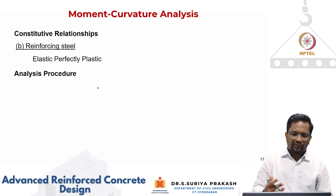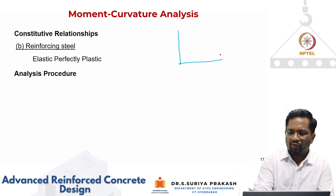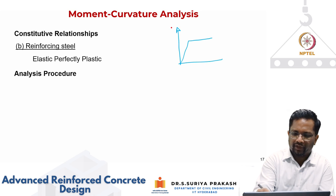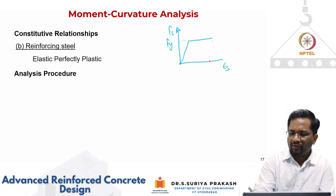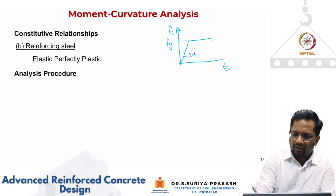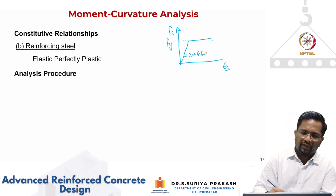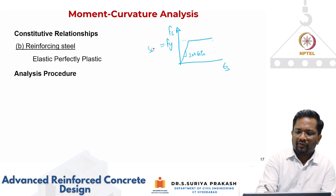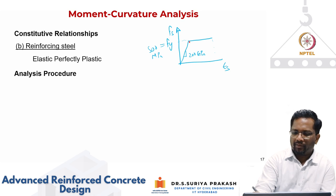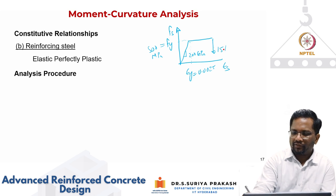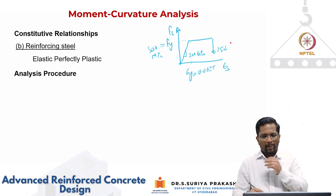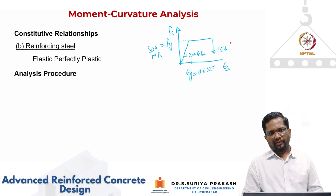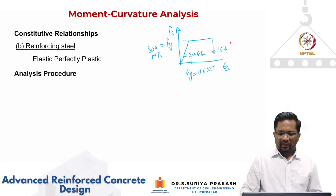For steel, we assume elastic perfectly plastic behavior for both compression and tension. The stress-strain relationship has a yield stress Fy and elastic modulus of 200 GPa. For Fe 500 grade, Fy is 500 MPa, the yield strain epsilon_y is 0.0025, and rupture occurs at about 15% strain (0.15). This is the elastic perfectly plastic relationship we are going to use for this part of the module.